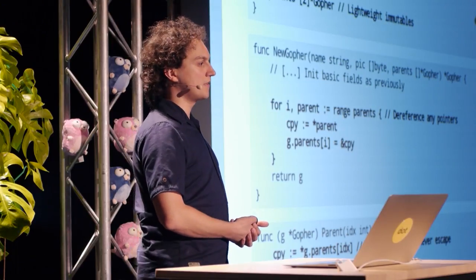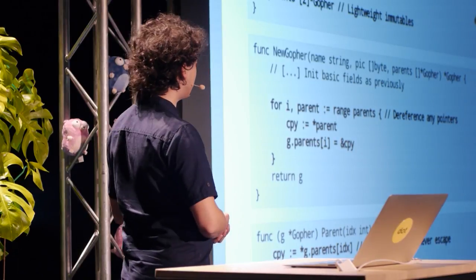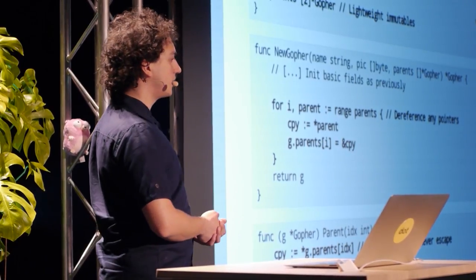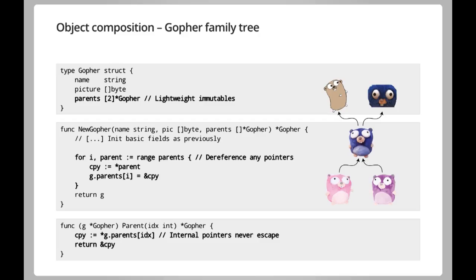If a getter wants to retrieve an internal pointer, I can't just return it — somebody might replace the data underneath — so I do need to create another copy, but all of them are cheap. Looking at the squishable gopher descendancy graph, the pink gopher has the same ancestors as the purple gopher, but it is enough to store them only once in memory. That is really powerful — even though I can send these gopher hierarchies all over the place, storing them once is enough.